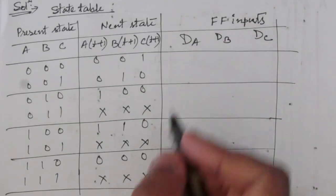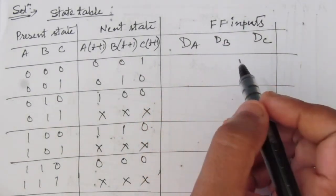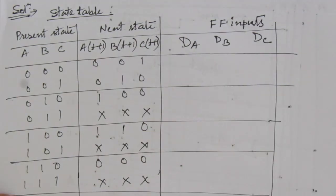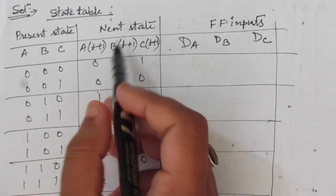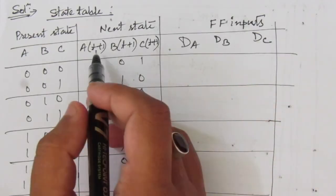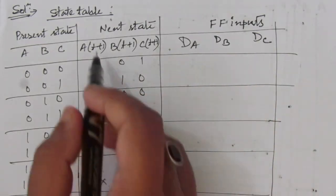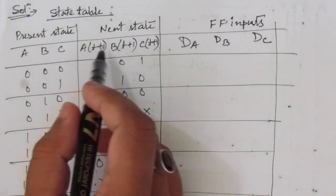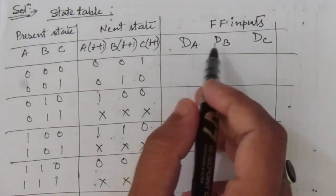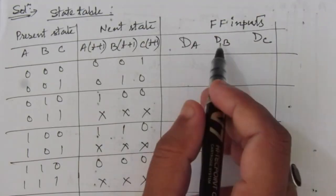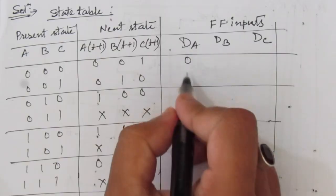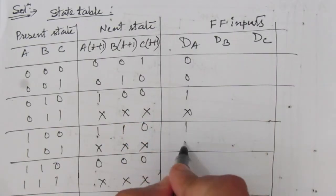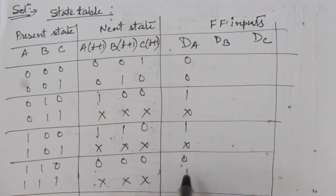Now we have to find out the flip-flop input values using the excitation table of the D flip-flop. For a D flip-flop, we know that whatever we have at the input will be the output. That means whatever we want in the next state should be the input. So the DA column will be exactly the same as the next state values of A. The DA column values are: 0, 0, 1, don't care, 1, don't care, 0, don't care.